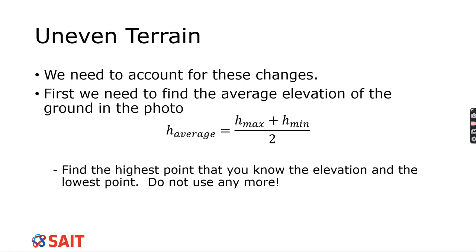Having some understanding of the aerial photo is very helpful here, and Google Earth has become really useful for this. If given 20 different elevation points, just look for the highest and lowest and take the average between those two. Averaging all points can introduce bias — for instance, if you took many elevation readings in one particular area, you wouldn't account for the rest of the photo. Only use the highest and lowest point and divide by two.